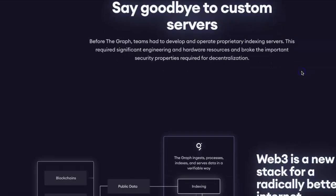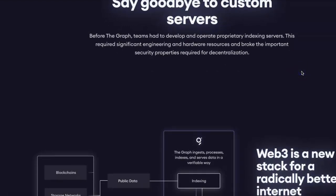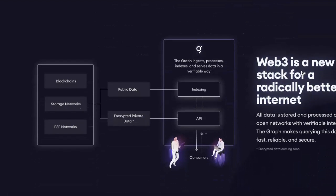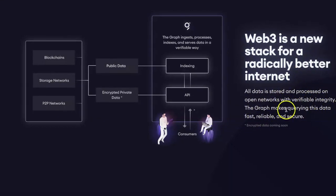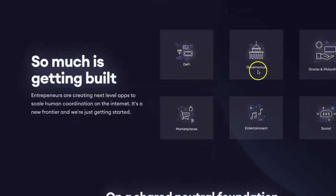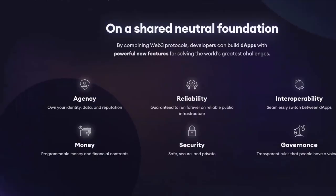The open-source code is pretty much solving the issues that custom servers have, like overloads. It's a new development on the blockchain — definitely a much-needed solution. All data is stored and processed on open networks with verifiable integrity. The Graph makes querying this data fast, reliable, and secure.